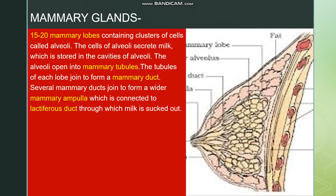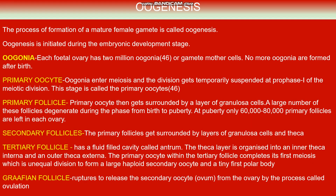Mammary glands are also part of the female reproductive system. Each gland contains around 15 to 20 mammary lobes, and each lobe contains clusters of cells called alveoli — the milk-secreting cells. The alveoli open into mammary tubules. The tubules of each lobe join to form a mammary duct, and several mammary ducts join to form a wider mammary ampulla, which is connected to the lactiferous duct through which milk is sucked out.